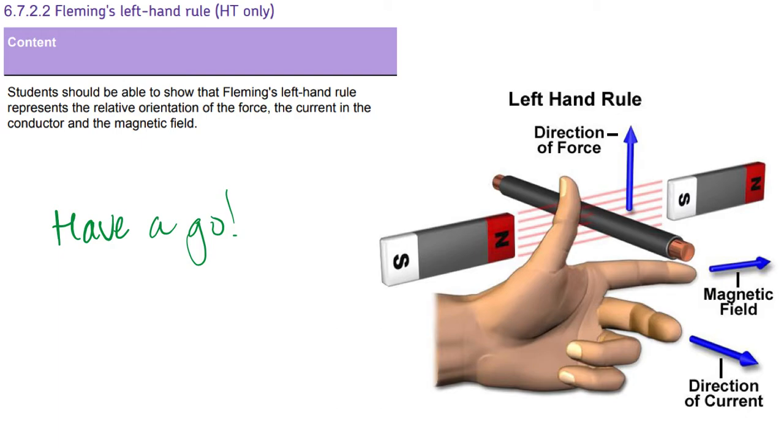So now let's have a go together. So get your left hand, make sure that your thumb, your first finger and second finger are all at right angles to each other. So you might feel a little bit of pain if you keep it in this position for very long.